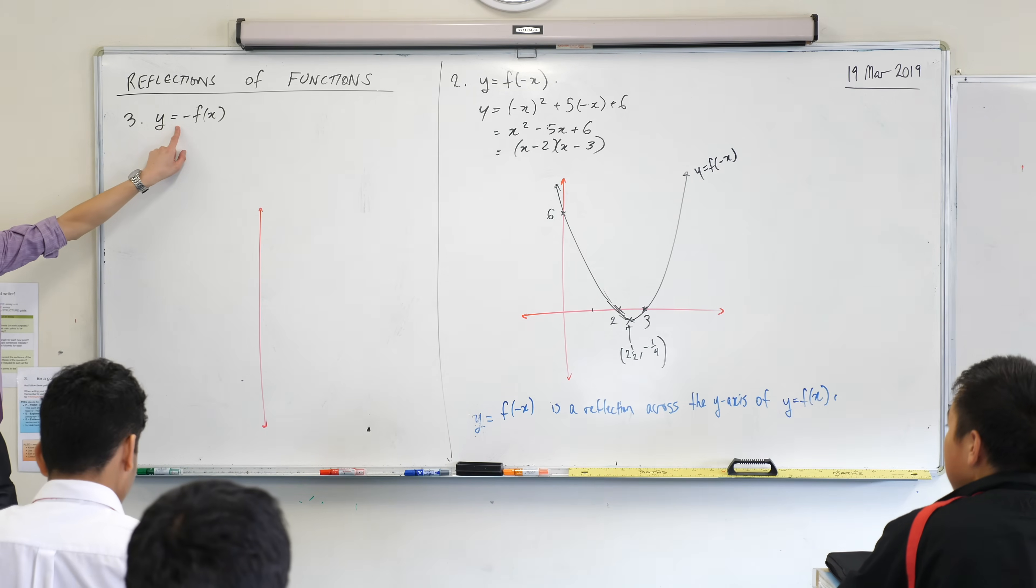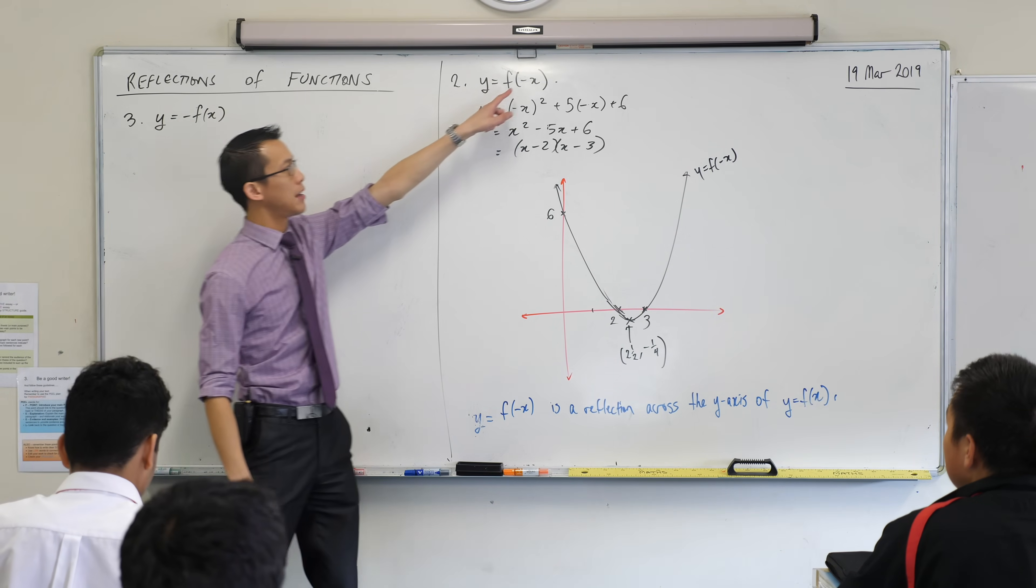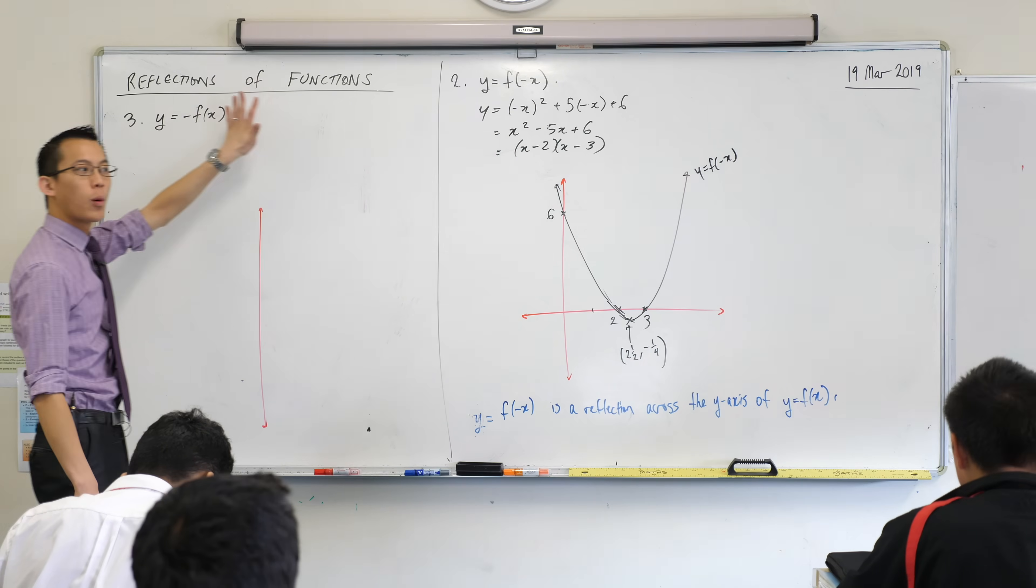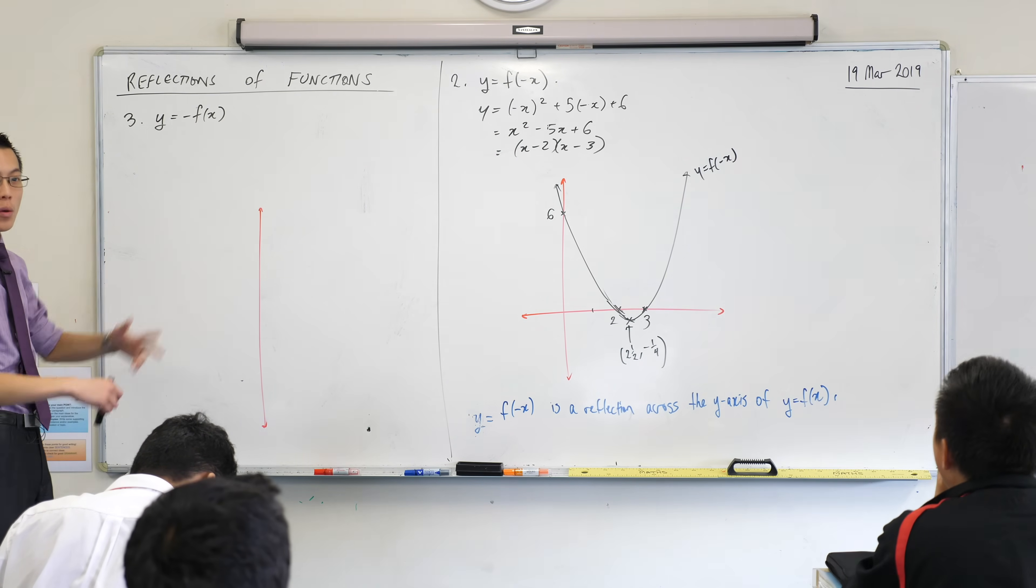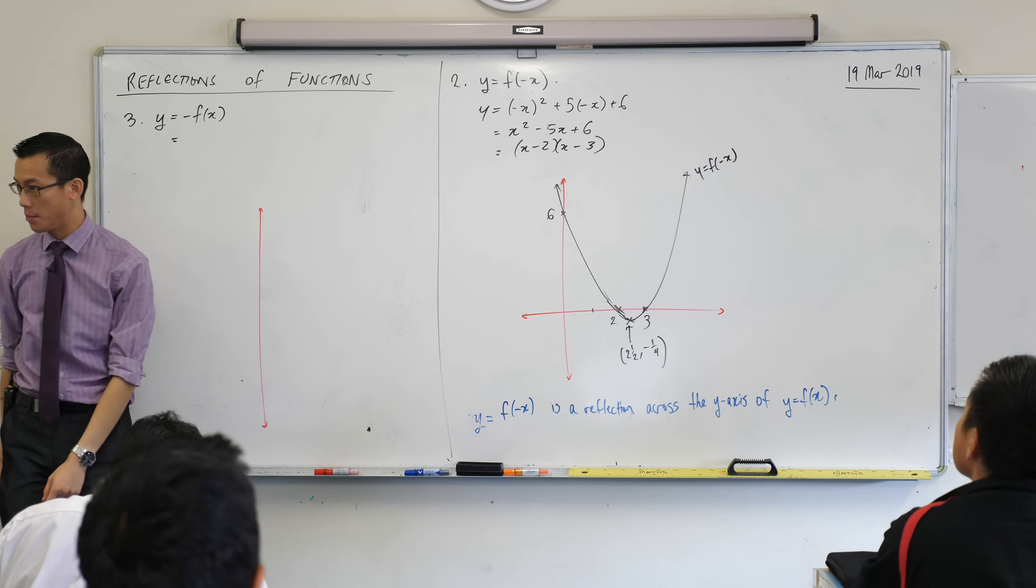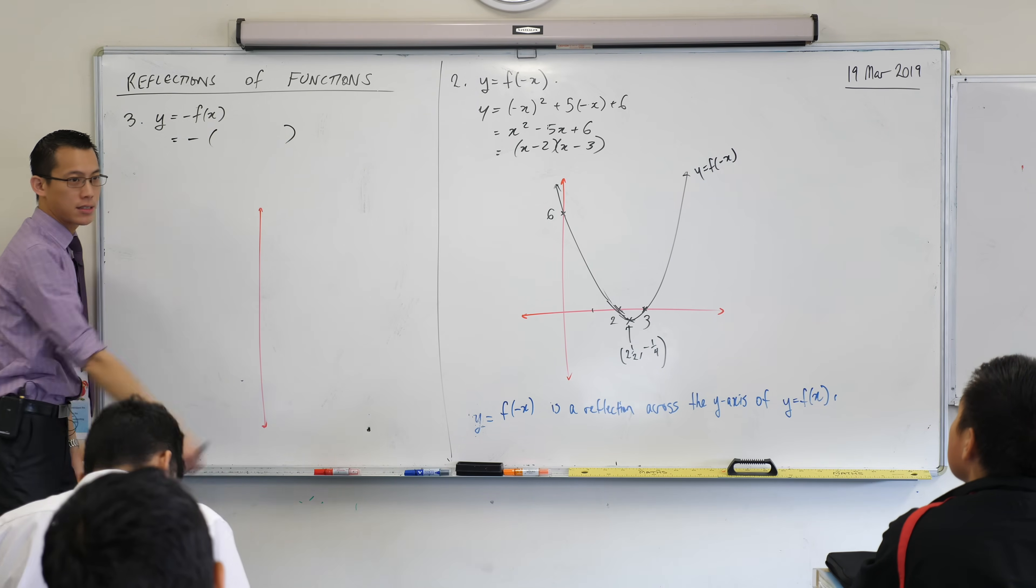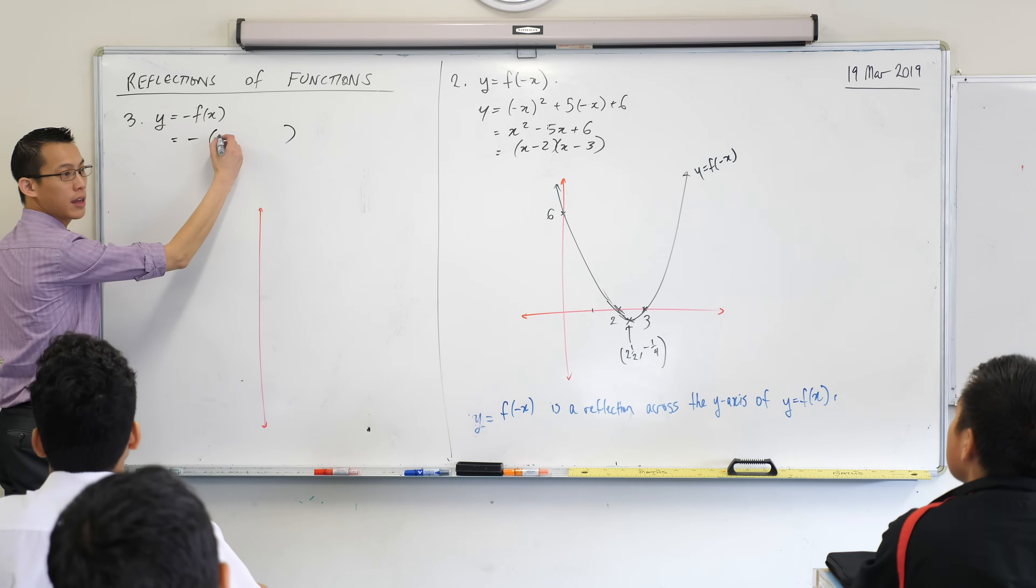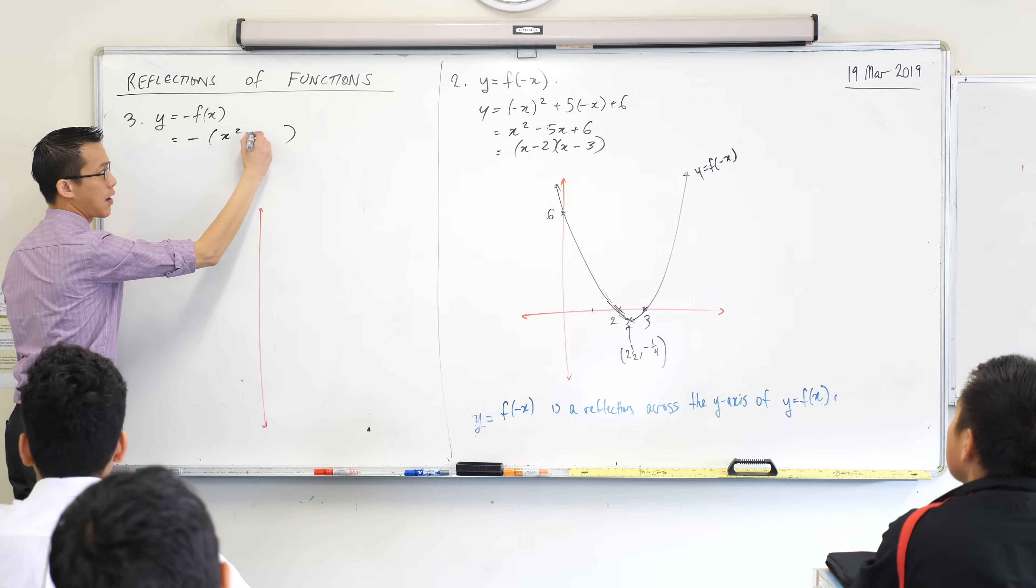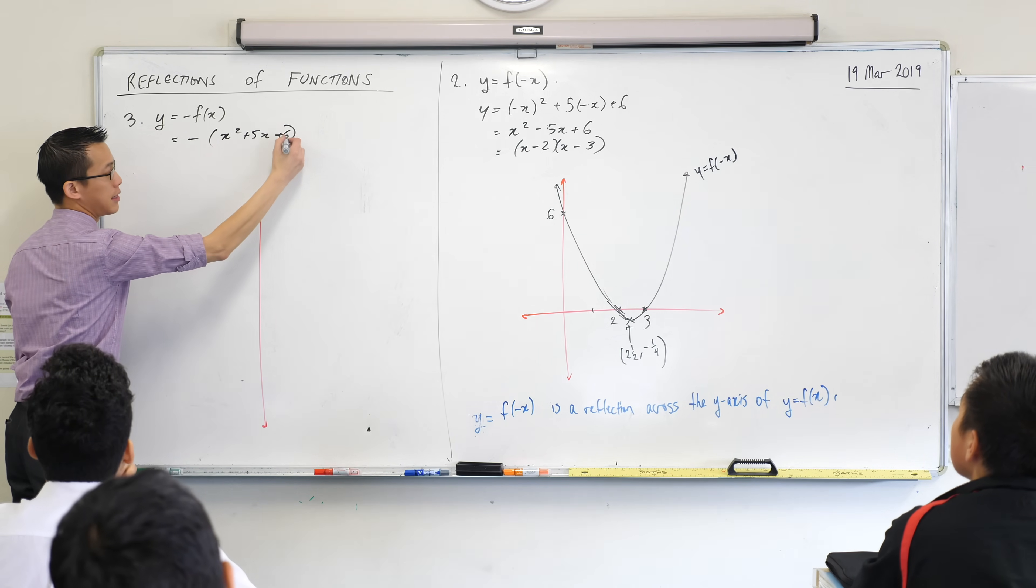If instead of the minus sign being inside, attaching to the x, if it were on the outside, what would happen? Well, let's have a go at this. It's the same f(x) we began with. So I'm going to write minus, and then here comes the entire function. It's going to be x squared plus 5x plus 6.